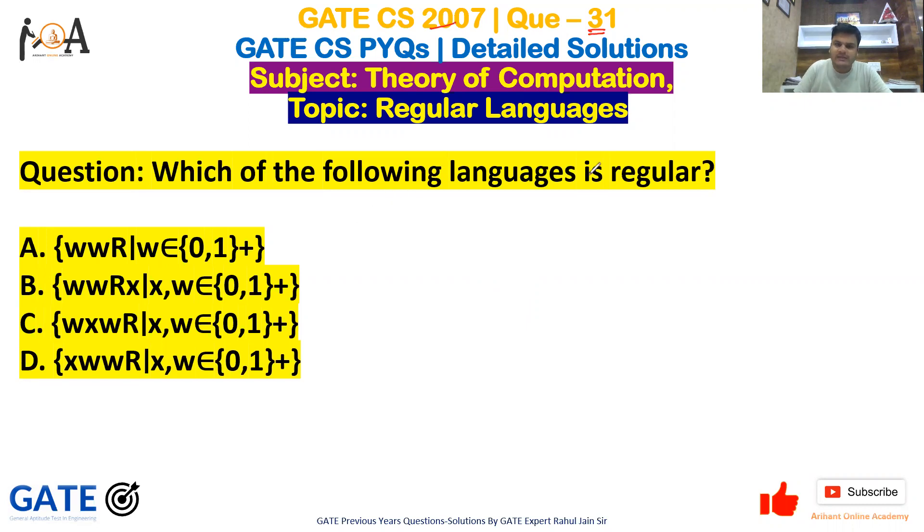The question is very simple: which of the following languages is regular? If you see option A, that is {wwR | w∈{0,1}+}, where w can belong to 0 or 1, the combination of 0 or 1.